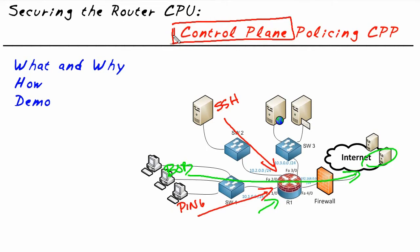How could an attacker leverage that? An attacker could send thousands, tens of thousands, or hundreds of thousands of packets to the IP address of the router, and the router would have to respond to every one, which could use up a lot of CPU. How do we protect against something like that?